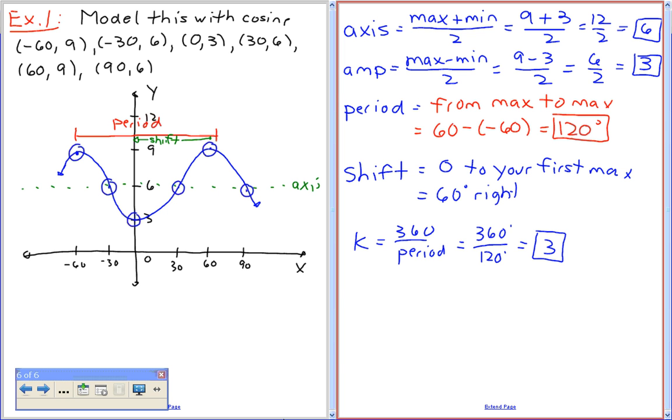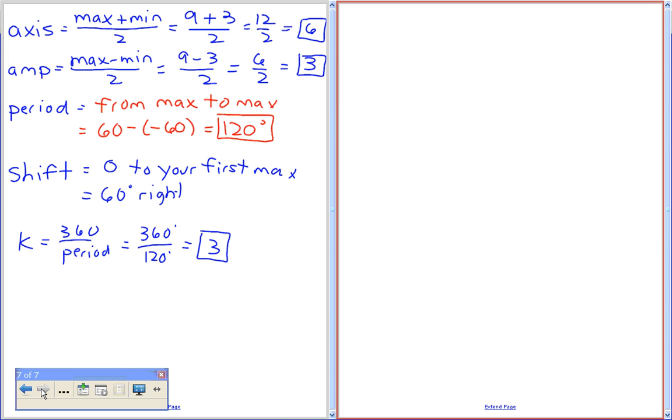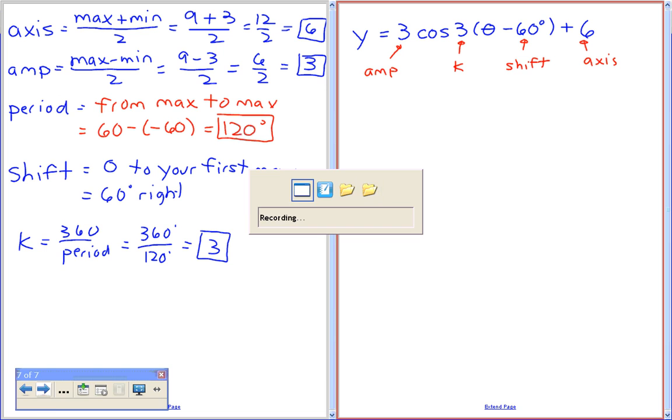This is difficult the first time, but you guys can do this one. Now we need to actually make an equation. Can I get anyone to be brave here? I'm not going to call on anyone in this case. I want someone to be brave right now. What is the equation for this one to be? Very good. And if you need me to write in where you brought that from, this is your amplitude. This is your K value. This is your shift. And this is your axis.